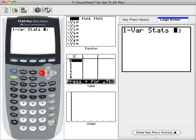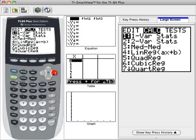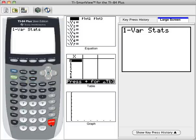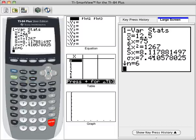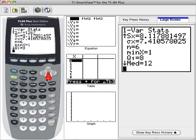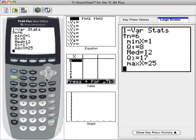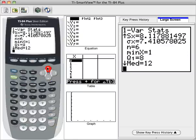But if your data are in list one, you can just press enter right now and it'll give you your set of one variable stats. And you'll notice there's a down arrow key here. If I press the down arrow key, I can scroll down to see there's a lot more data down there. So let's go through what we've got here.